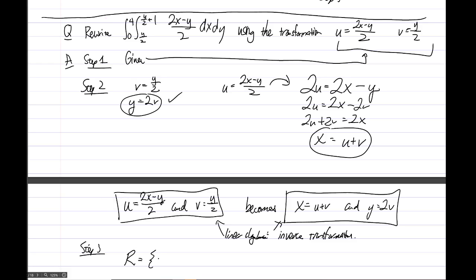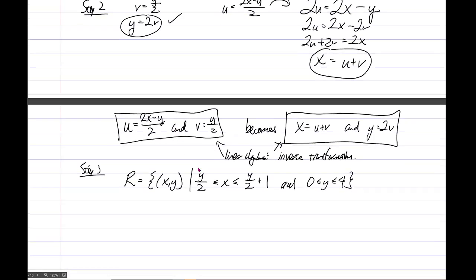It's the set of points X, Y, satisfying, we'll see that X has to go, we see it here, right? X has to go at the smallest from, so X is bound between Y over 2 and Y over 2 plus 1. And then Y is bound between 0 and 4. So 0 less than or equal to Y less than or equal to 4. Okay, we need to draw this to understand what this space is.